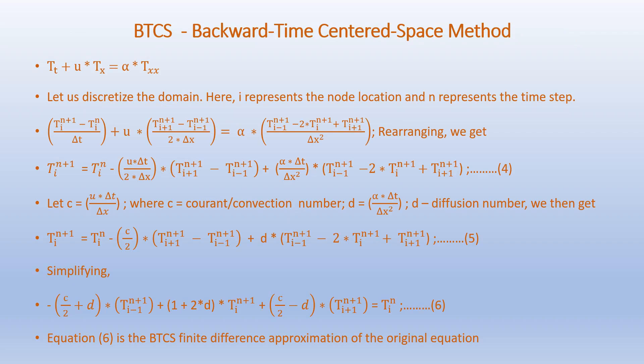Coming back to the 1D advection equation: T_t plus u T_x equals alpha T_xx. When we use BTCS or backward time centered space method, we discretize the domain where i represents the node location and n represents the time step. Accordingly we get: (T_i^(n+1) minus T_i^n) over delta t equals u times (T_(i+1)^(n+1) minus T_(i-1)^(n+1)) over 2 delta x, which equals alpha times (T_(i-1)^(n+1) minus 2 T_i^(n+1) plus T_(i+1)^(n+1)) over delta x squared. Here T_x and T_xx use centered difference approximations.